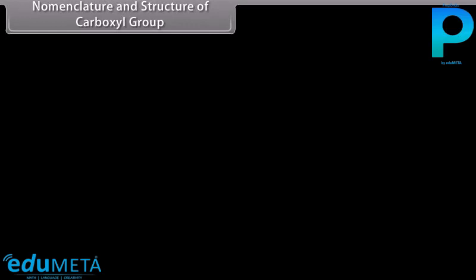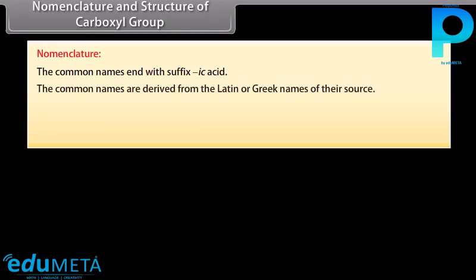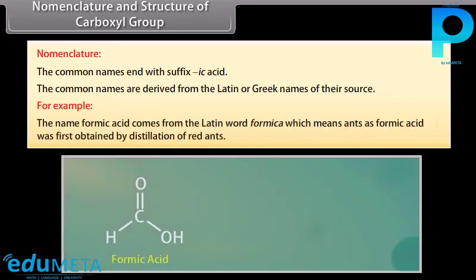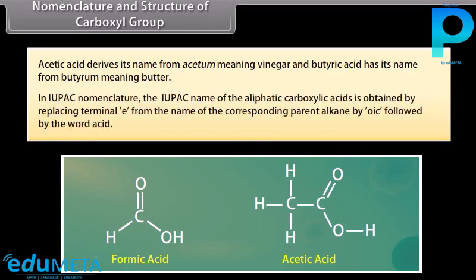Nomenclature and structure of carboxyl group. Nomenclature: the common names end with the suffix '-ic acid'. The common names are derived from Latin or Greek names of their source. For example, the name formic acid comes from the Latin word 'formica' meaning ants, as formic acid was first obtained by distillation of red ants. Acetic acid derives its name from 'acetum' meaning vinegar, and butyric acid from 'butyrum' meaning butter. In IUPAC nomenclature, the IUPAC name of aliphatic carboxylic acids is obtained by replacing the terminal 'e' from the name of the corresponding parent alkane by 'oic' followed by the word acid.